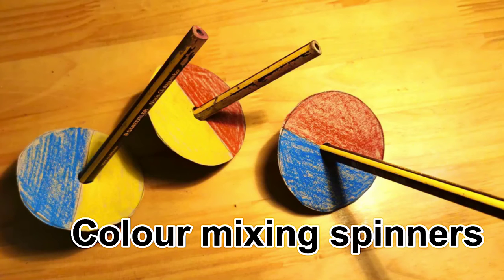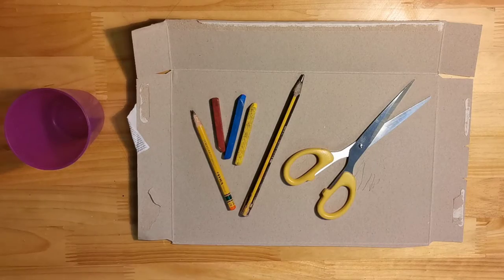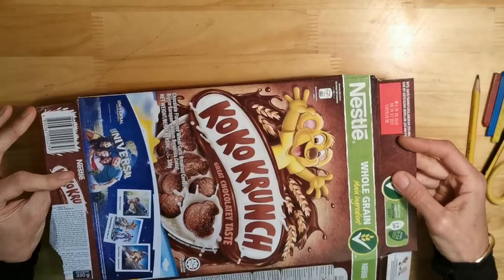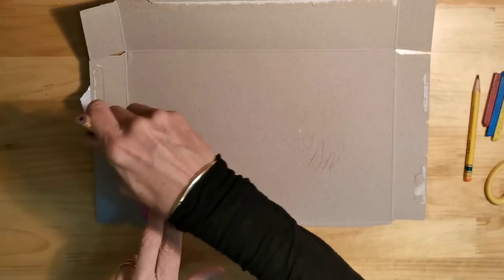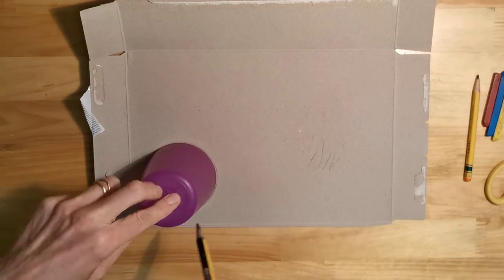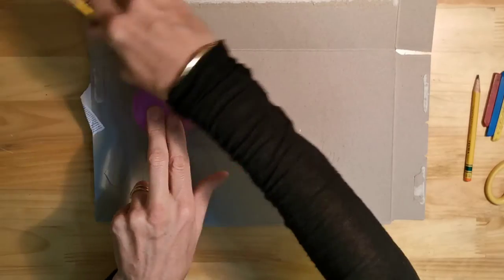Today we're going to make some colour mixing spinners. Here is what you need: half an old cereal box, a pencil, some colours - blue, red and yellow - and a pair of scissors and a cup or something round to draw around.